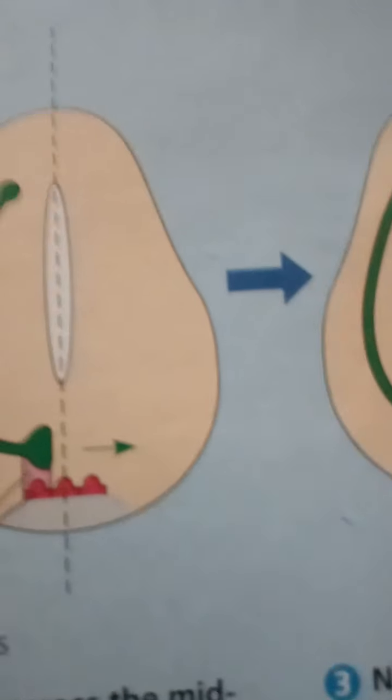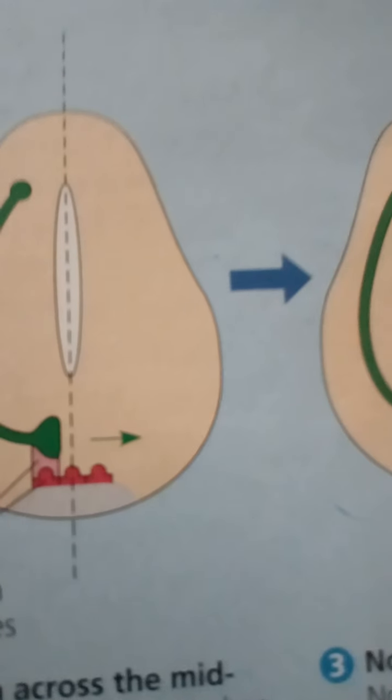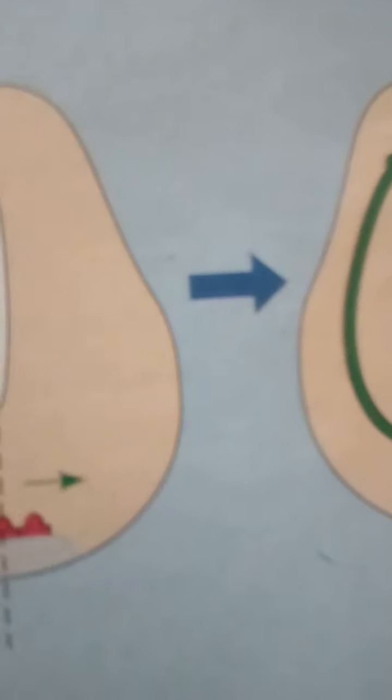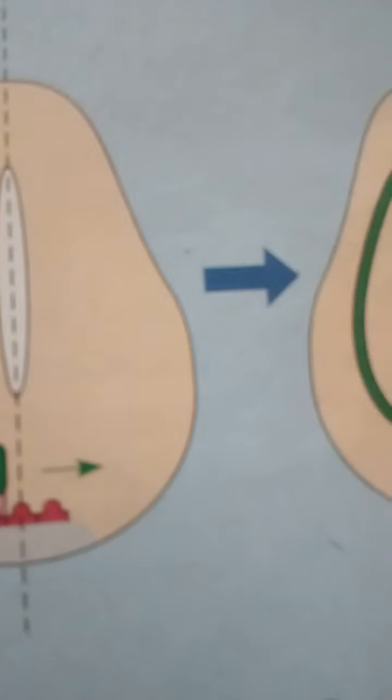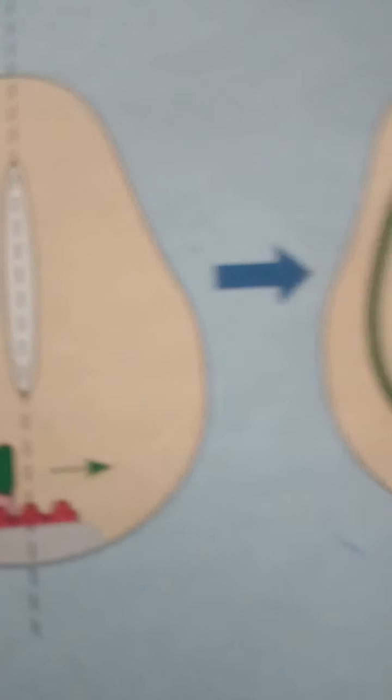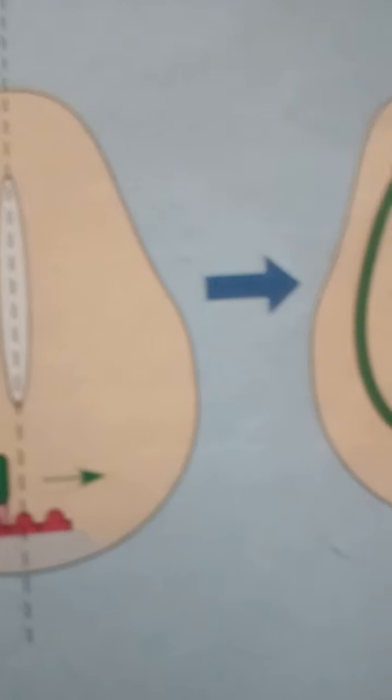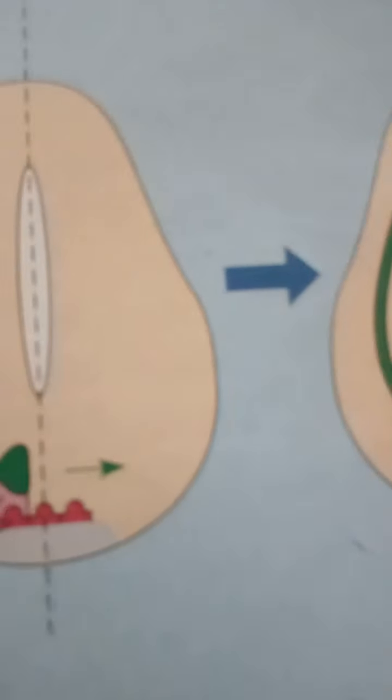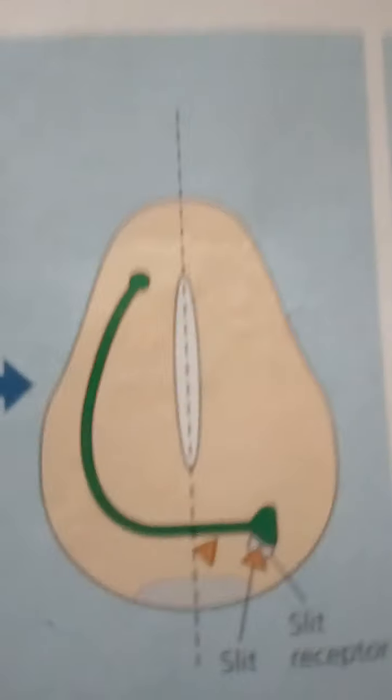Mature neurons, with their extensive processes and intricate connections with other cells, clearly are not able to undergo cell division. Therefore, the new brain neurons must have come from stem cells. Stem cells are relatively unspecialized cells that continually divide. While some of their progeny remain undifferentiated, others may differentiate into specialized cells under the right conditions.